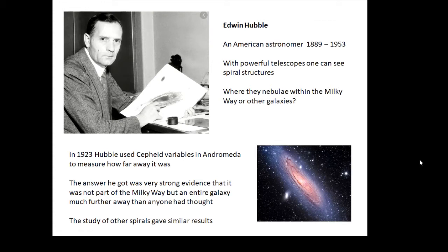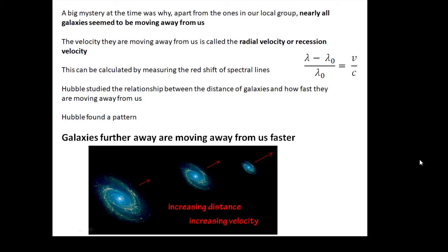So the universe is not just one galaxy—lots and lots of galaxies. There was another big mystery: why, apart from the galaxies in our local group, are all of these galaxies moving away from us? There are lots and lots of galaxies, and nearly all of them are moving away from us. We can calculate how fast they are moving away using this equation here, which I've talked about in another video. It's called the radial velocity or the recession velocity.